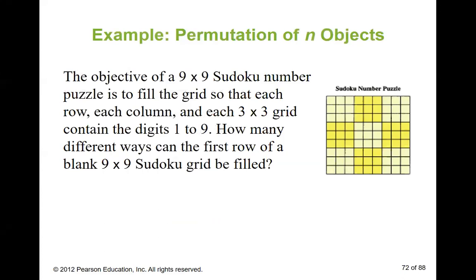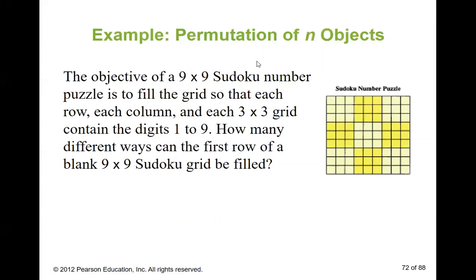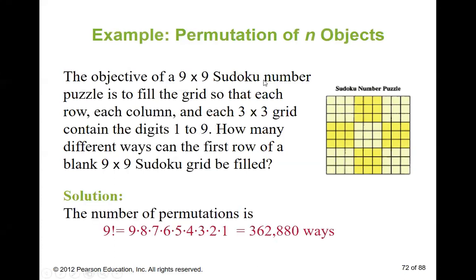It's really the fundamental counting principle. If you put nine blanks, how many different numbers do you have to choose from for the first spot? Nine, because you're only using digits one through nine. After you use one, can you use it again in the same row? No — so that leaves eight, then seven, six, and so on. That's why it ends up being nine factorial, which equals 362,880 ways just for the first row. And you've got a nine-by-nine grid — that's why they can keep making all these different puzzles.